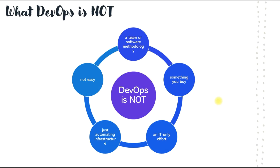Let's quickly look at what DevOps is not. DevOps is not easy because it is not a tool, not a team, not a software. It is not an IT-only effort — not something only a development team or project management team can do. It is not just automation of infrastructure — not just deploying servers together, automating networking deployment, bringing in Puppet for server deployment, or using Chef for configuration management. DevOps is not a team or a software methodology. It is bringing people, processes, and products together.